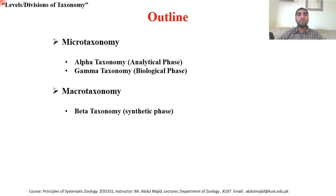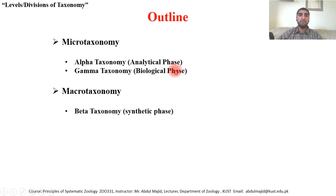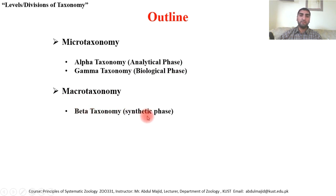In today's lecture we will talk about micro taxonomy, which has two phases: number one is alpha taxonomy, also known as the analytical phase, and the second is gamma taxonomy, also known as the biological phase. Then we will talk about macro taxonomy, which has only one phase — beta taxonomy, or the synthetic phase.